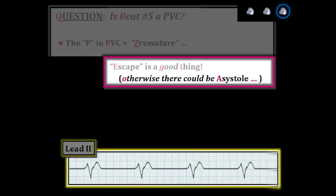Bottom line: PVCs are different than escape beats. Escape beats are easy to recognize because, unlike PVCs, they occur later than expected.